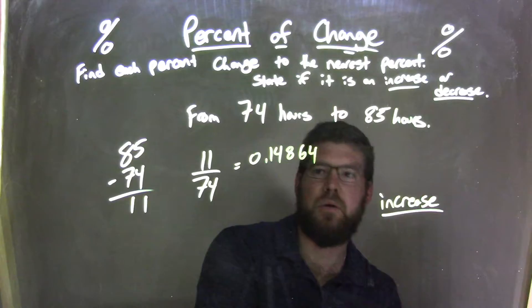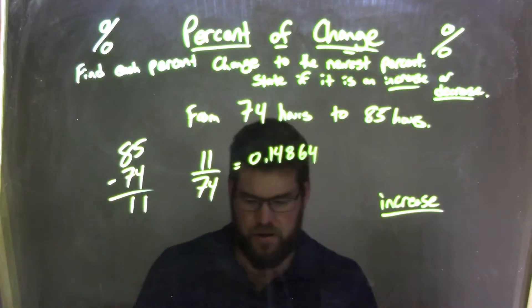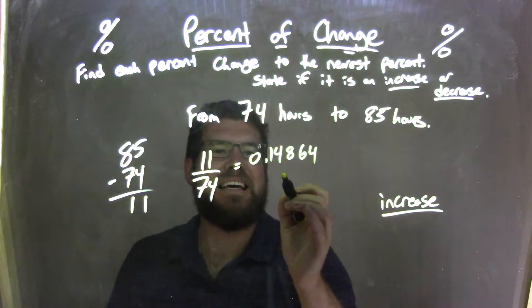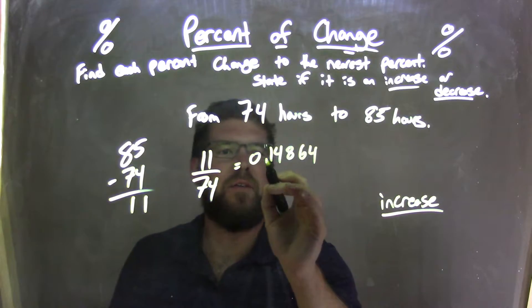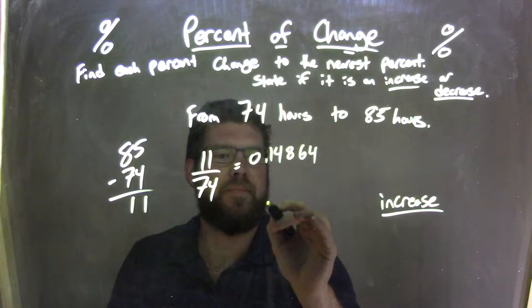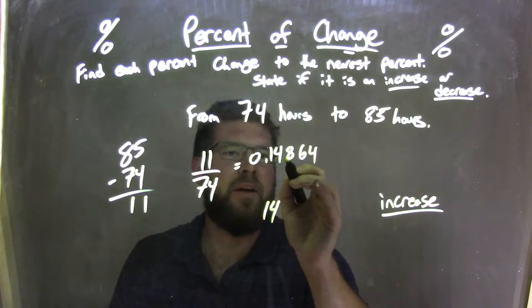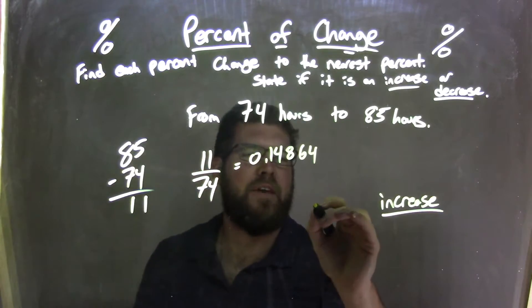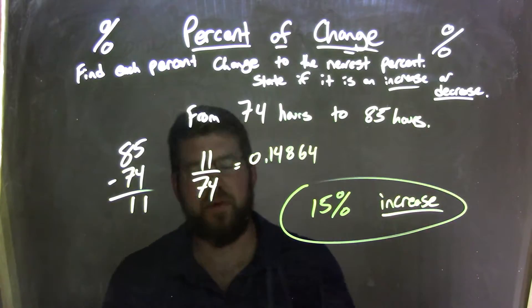So, we're talking about a percent increase. Our percent increase here is when we move the decimal two units, one, two. So, we have 14 at first. But that 8 there causes it to round up. So, we actually have a 15 percent increase.